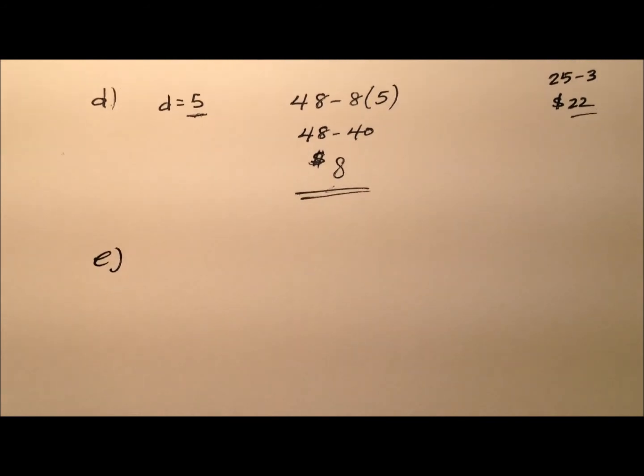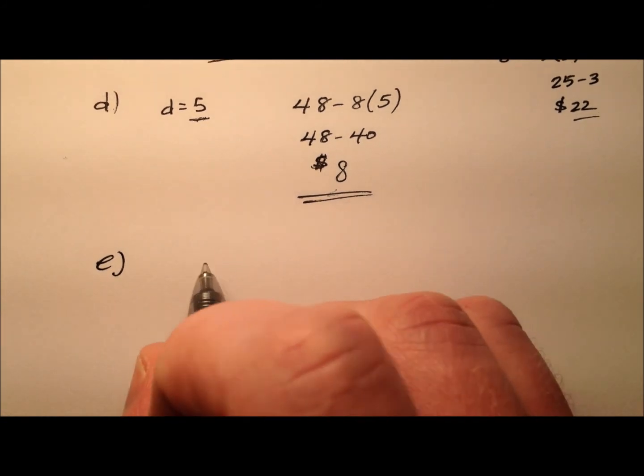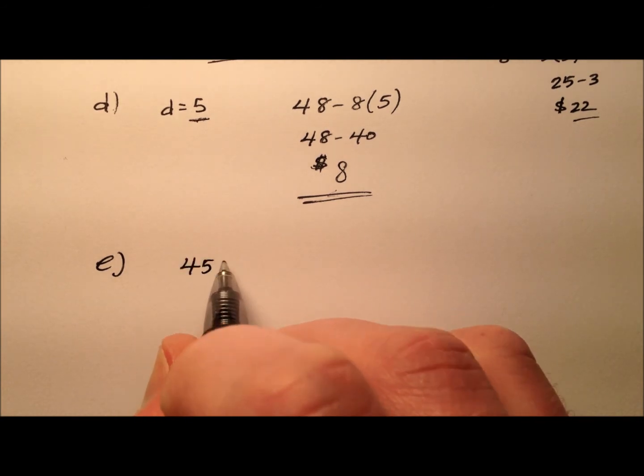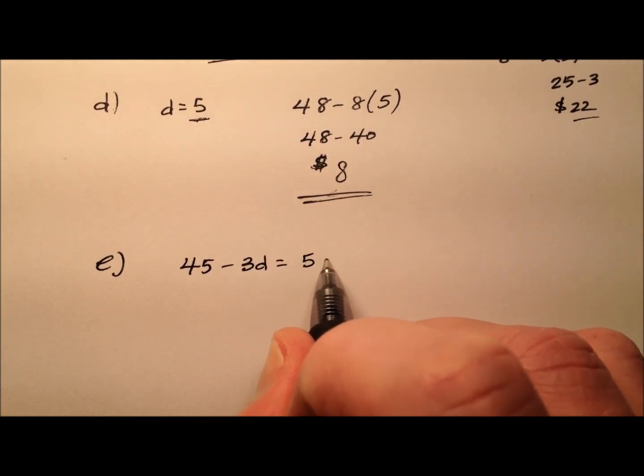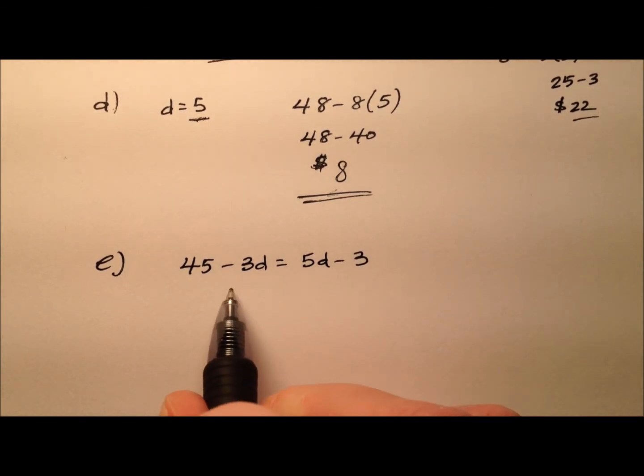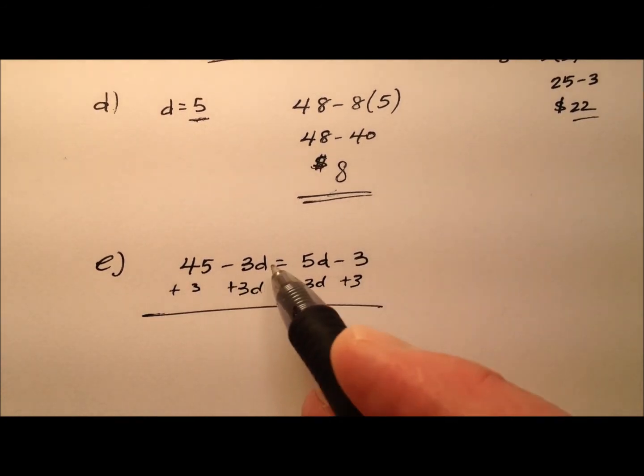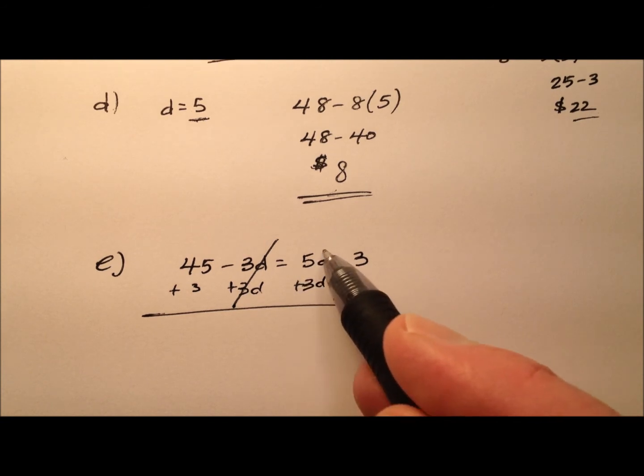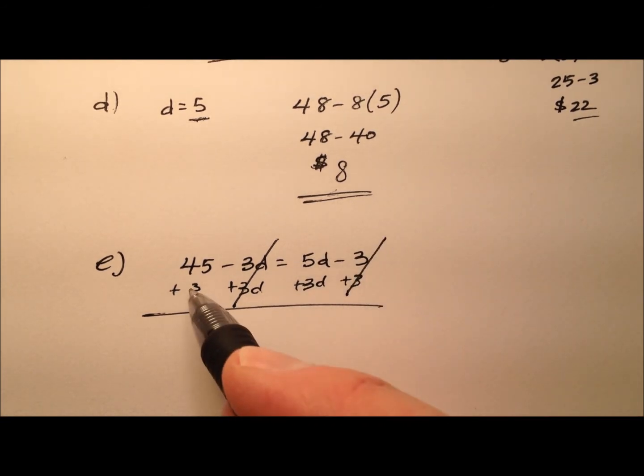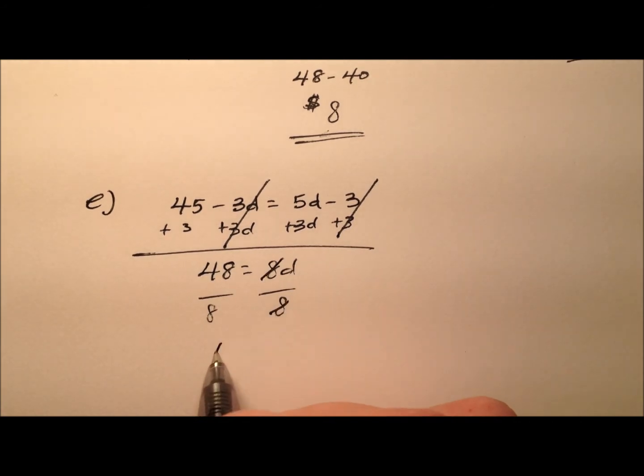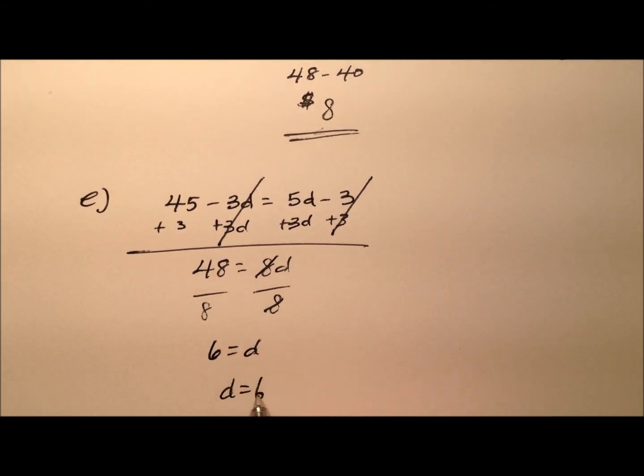Finally, what is the value of d that will give Joe and Sue the same amount of money, and how much money will that be? To find when they're the same, I'm going to set those two expressions equal to each other. By adding 3d to both sides and then adding 3 to both sides, it looks like 48 equals 8d. When I divide both sides by 8, it looks like 6 equals d, or d equals 6.